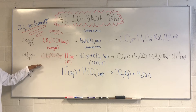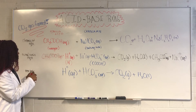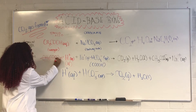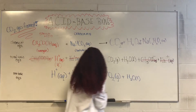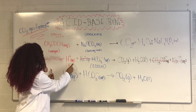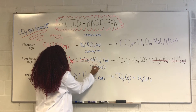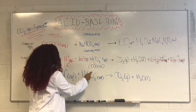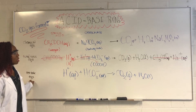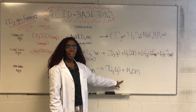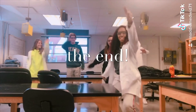We have written down the total ionic equation with all compounds broken down into their various ions. We find that we can cancel the spectator ions, and we see that we can do a proton transfer of hydrogen to the bicarbonate, which then leads us into the net ionic equation producing carbon dioxide and water.